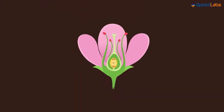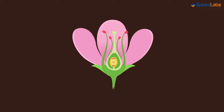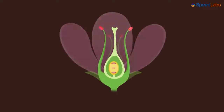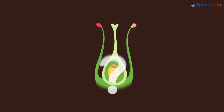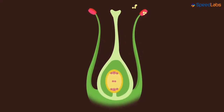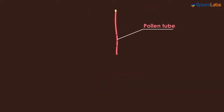Now let us see how fertilization occurs in flowers. For this process to occur, both the gametes need to be close to each other. The male gametes from the pollen grains deposited on the stigma of the flower start travelling towards the ovary through a tube. This tube is called the pollen tube.